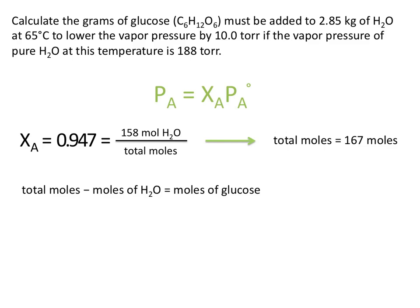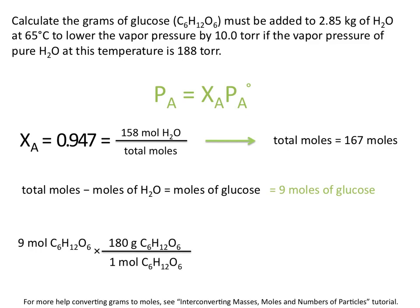The moles of glucose must equal the total number of moles minus the moles of H₂O: 167 moles minus 158 moles means we need 9 moles of glucose. Note that in the previous problem we had an ionic compound that ionized in water to form 2 different particles, but glucose is a molecular compound — when glucose dissolves in water, it does not ionize. To convert moles of glucose to grams, we use the molar mass of glucose, which is 180 grams per mole, giving us 1.62 × 10³ grams of glucose needed to lower the vapor pressure by 10 torr.